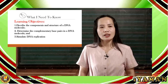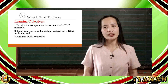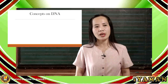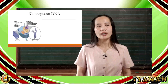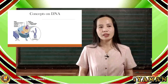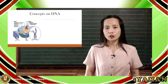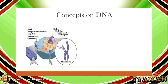In your previous grade, specifically in grade 7, you found out that there are three main structures of the cell, which are the cell membrane, the cytoplasm, and the nucleus. The nucleus is actually considered as the control center of the cell, because it controls all activities of the cell and contains what we call the genetic material.